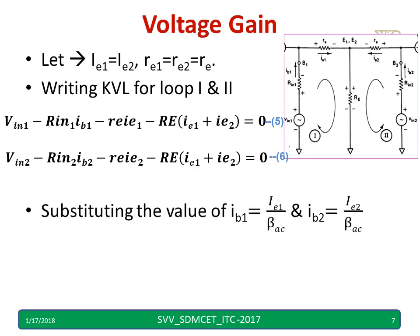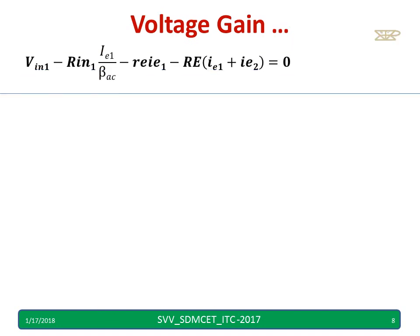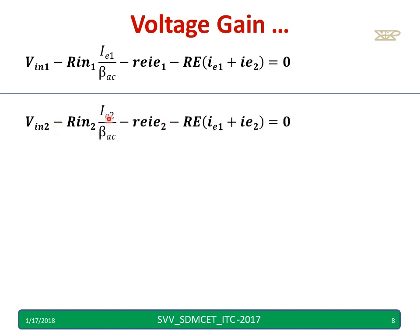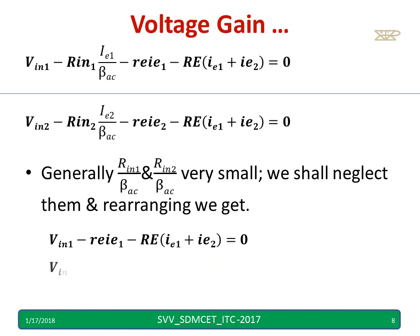Now, substituting IB1 as IE1 divided by βAC, and IB2 as IE2 divided by βAC, I will rewrite equations 5 and 6. The remaining terms stay as they are; only IB1 and IB2 are replaced. The equation becomes RIN1 times IE1 divided by βAC, with the rest kept as is. Usually, RIN1/βAC and RIN2/βAC are very small and can be neglected, so I rewrite the simplified equations.